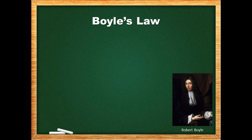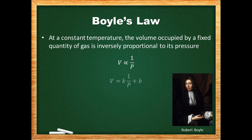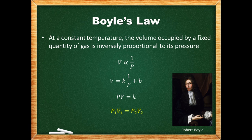The result was Boyle's Law, which states that at a constant temperature, the volume occupied by a fixed quantity of a gas is inversely proportional to its pressure. Mathematically, the volume is directly proportional to the inverse of pressure. Writing an equation for the straight-line graph in y = mx + b form and observing that the y-intercept b was 0 yields, after moving pressure to the left side, that the product of pressure and volume equals the slope, represented by a constant k. Since this product is constant for a fixed temperature and quantity of gas, we can write P₁V₁ = P₂V₂ to determine a new pressure or volume after one variable has changed.